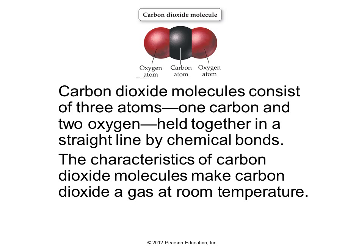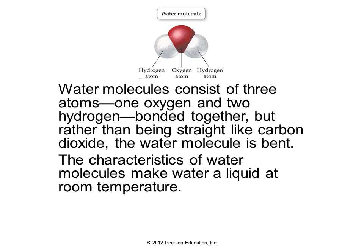Carbon dioxide is a molecule consisting of only three atoms: one carbon and two oxygens, held together in bonds that make the molecule a straight line. This characteristic makes carbon dioxide a gas at room temperature. The water molecule also has three atoms — two hydrogens and one oxygen — but rather than being straight like carbon dioxide, the water molecule is bent. This makes water polar and helps make it a liquid at room temperature.